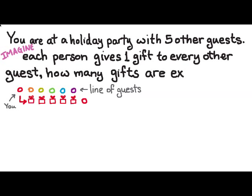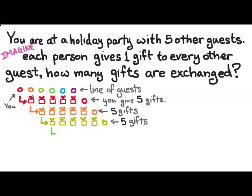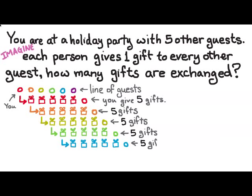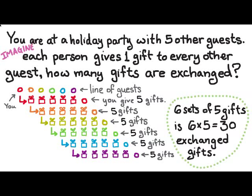Now the question is, how many gifts are exchanged in total? In particular, you give five gifts. Then the orange person goes and hands out gifts to everybody and gets back in line and they give five gifts. And then the yellow person gives five gifts, the green person gives five gifts, the blue person gives five gifts, and the purple person gives five gifts. We can see in total there are six sets of five gifts, and since six times five is 30, there's a total of 30 gifts exchanged.